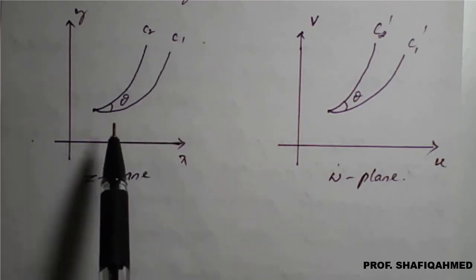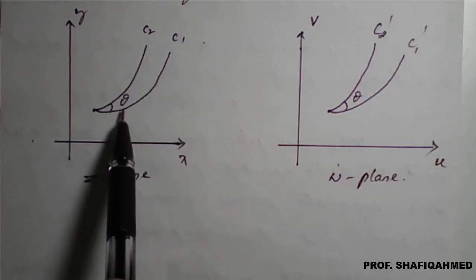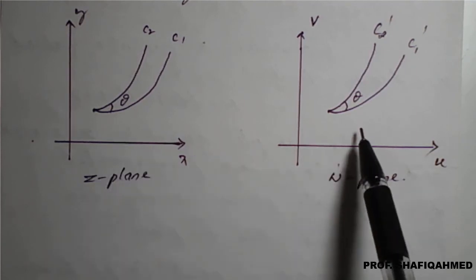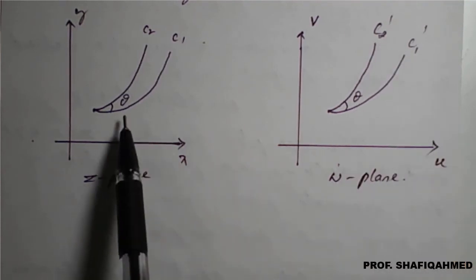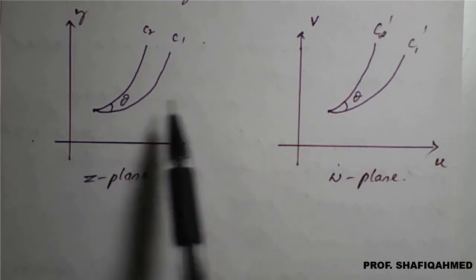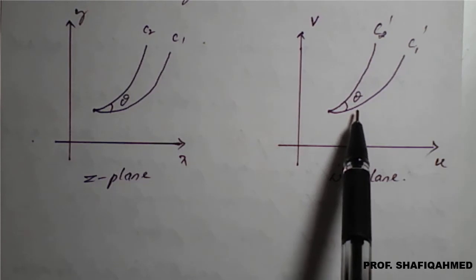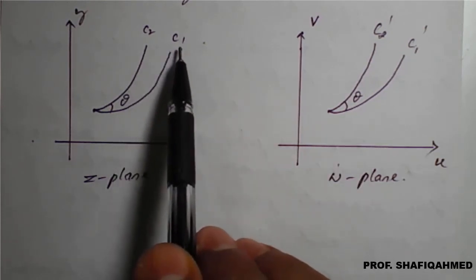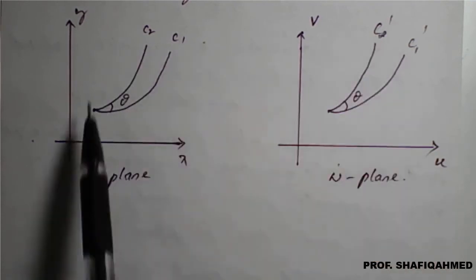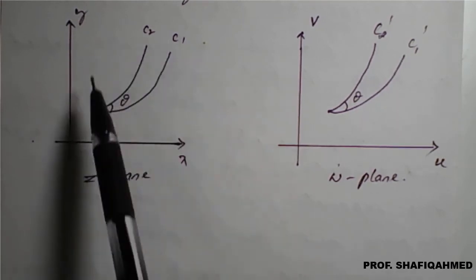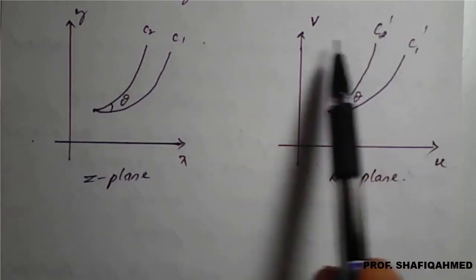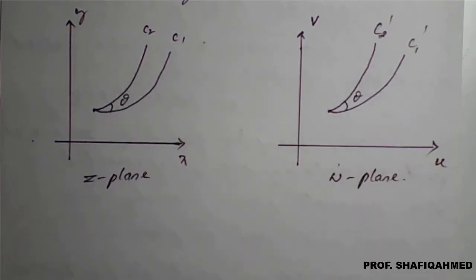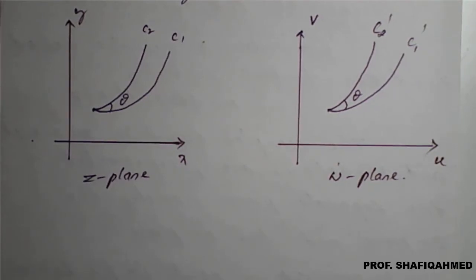Looking at the graph: in the z-plane, we have curve 1 and curve 2 making an angle theta in the x-y plane. These map to curves C1' and C2' in the w-plane, also making an angle theta. The angle magnitude and direction are preserved. C1 becomes C1' and C2 becomes C2'. For example, a straight line may be converted to a circle, or a parabola may convert to a straight line — all of these come under conformal transformation. There are different kinds of transformations under this category.